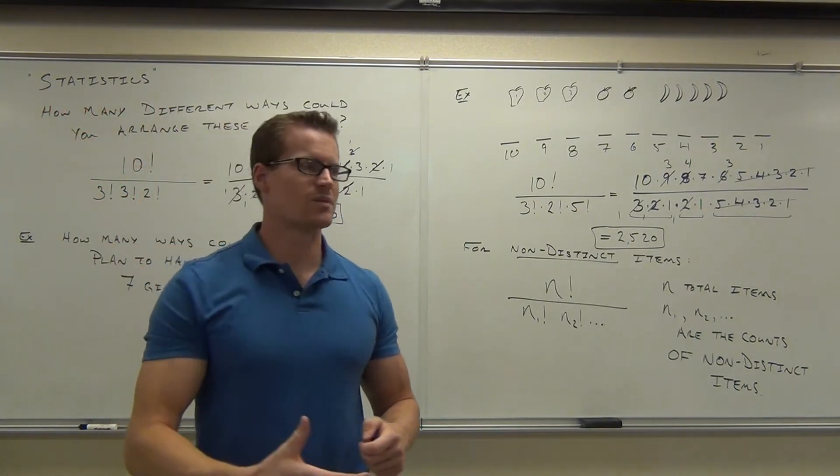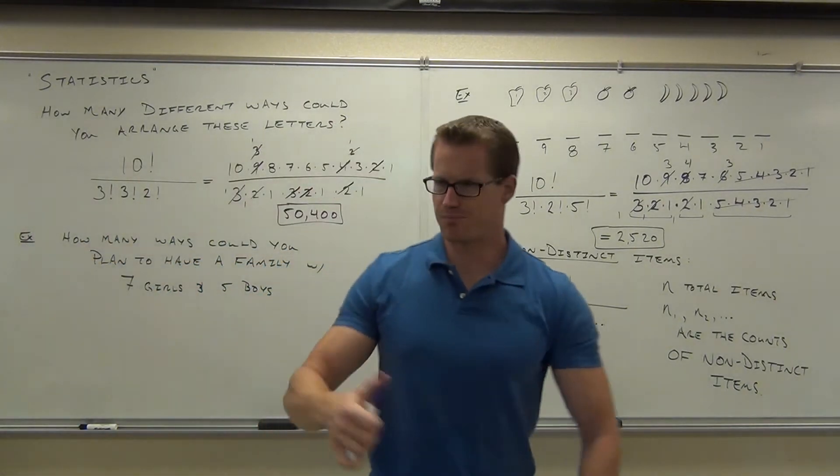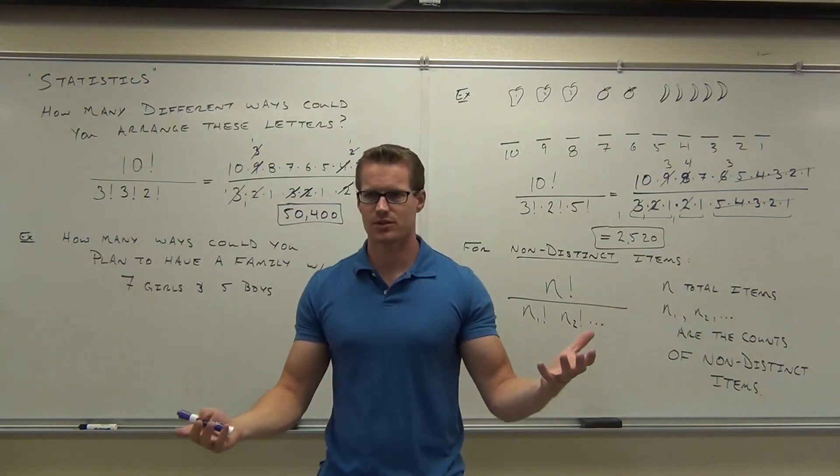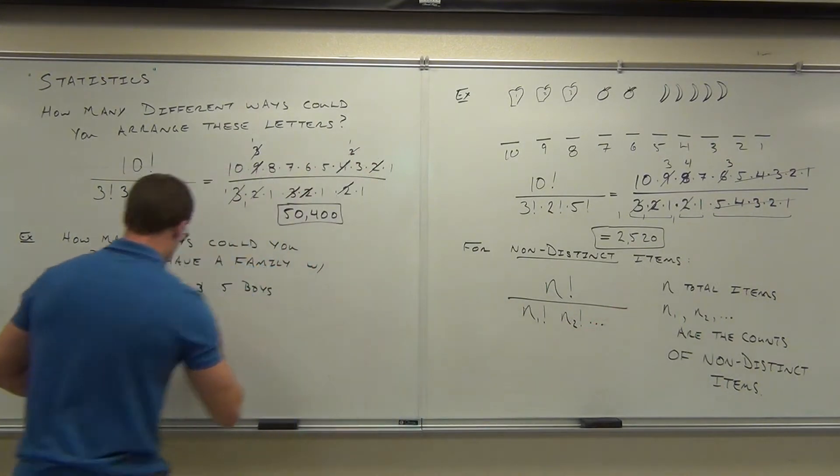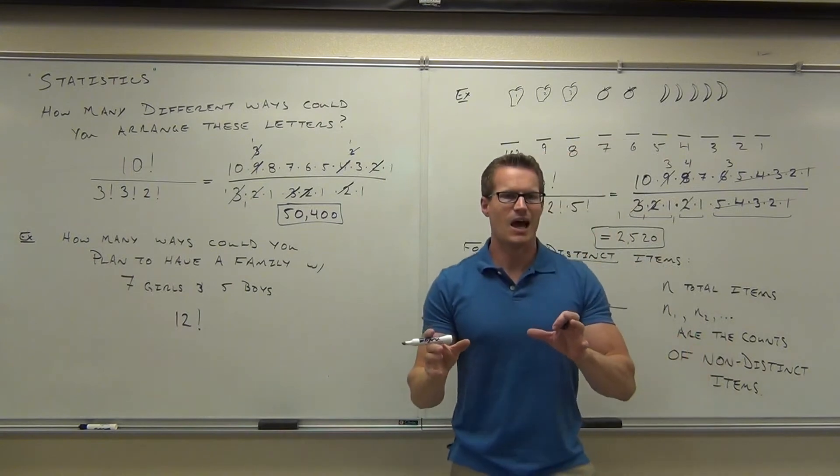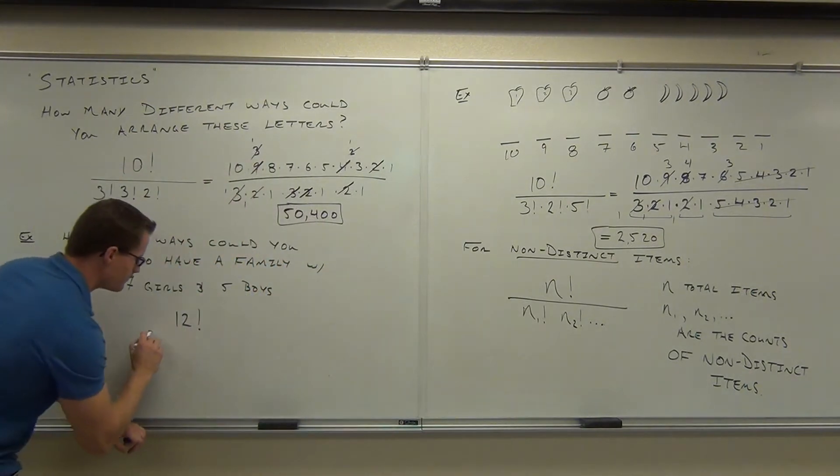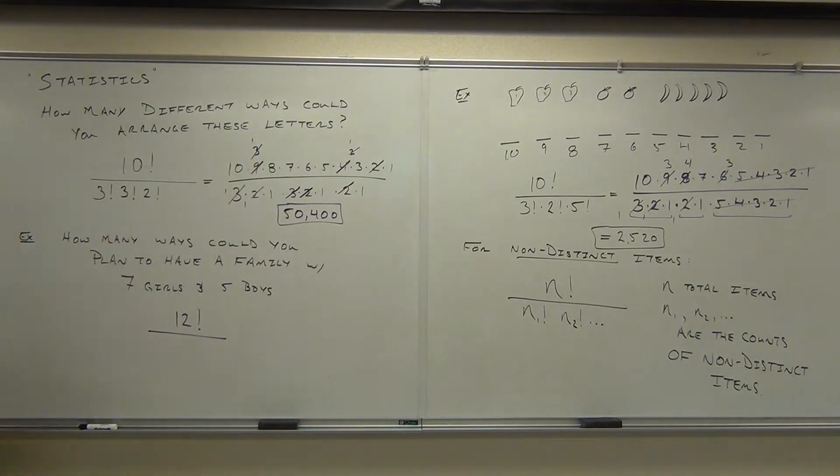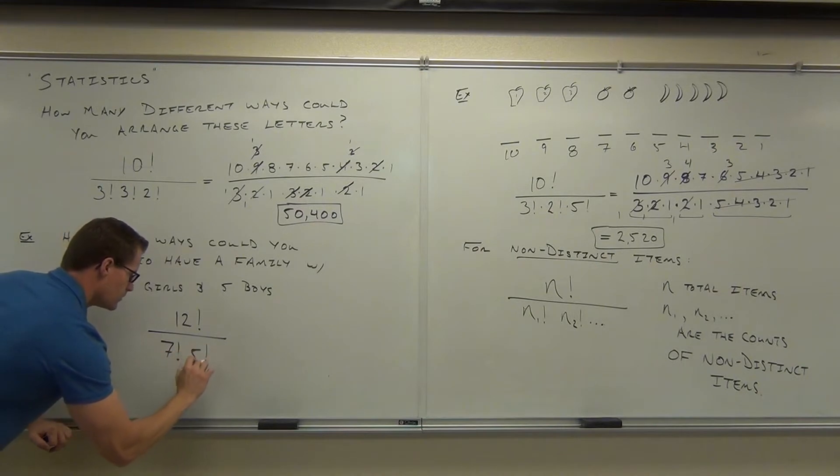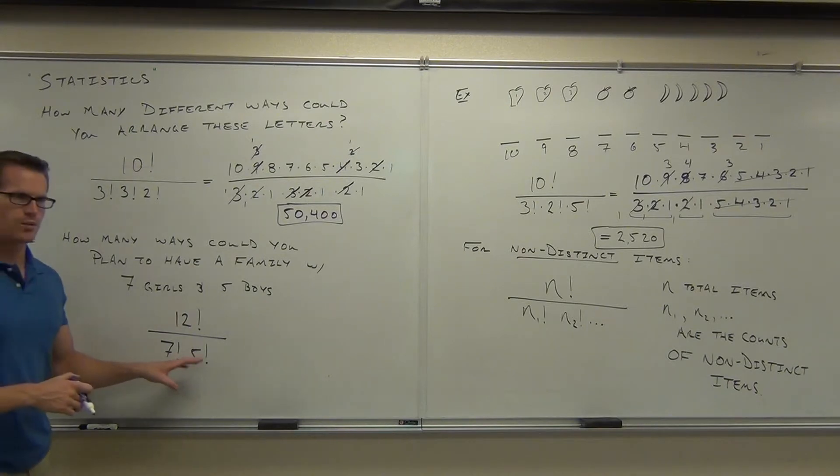If you had had 10 factorial different words, that would be way bigger than 50,400. How about if you start on this one? How many ways could you plan to have a family with 7 girls and 5 boys? How many people are we having in this family? How many kids? So if you had 12 distinct items, you would get 12 factorial from them. But for our case here, we're considering our girls and our boys to be the same. So we have non-distinct items. What do we need to divide by to get rid of some of these choices? I'm going to leave it to you to figure out what that one is.